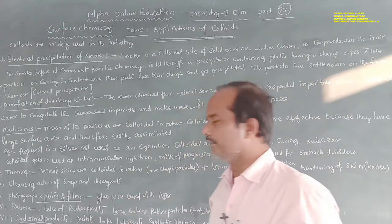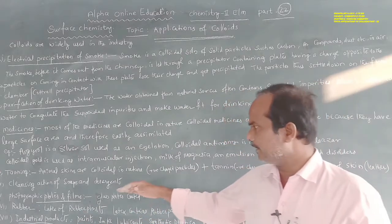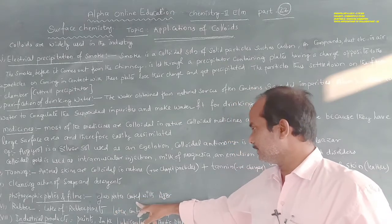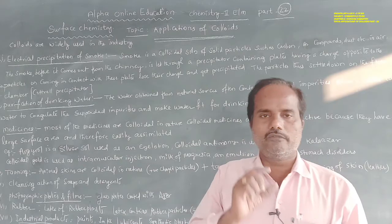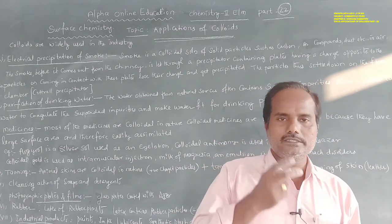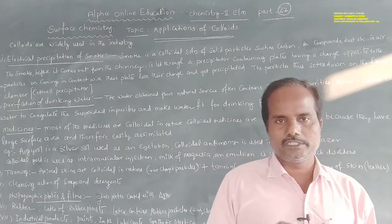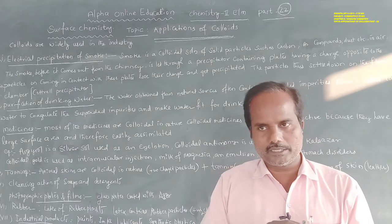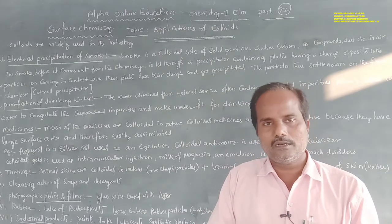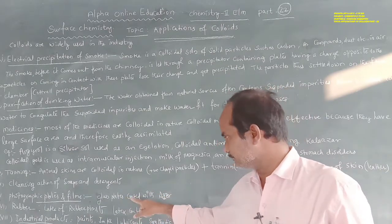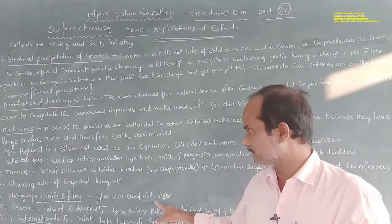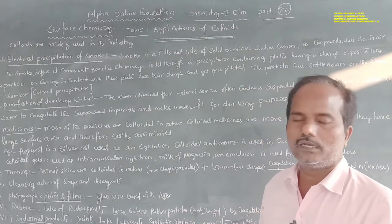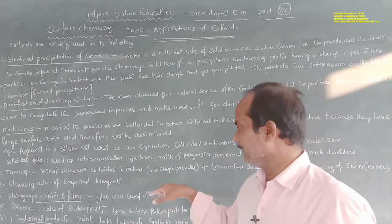The next application is photographic plates and films. Glass plates are coated with silver bromide, which is a light-sensitive material. Silver bromide is taken in colloidal form and applied over the surface of glass plates or films. Because it is light-sensitive, it acts as a photographic medium.